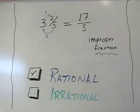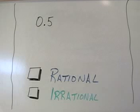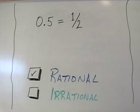Now let's take a look at a decimal, 0.5. Hopefully this is one you recognize. This is equal to a half. This is a rational number.